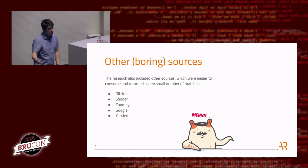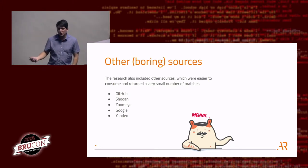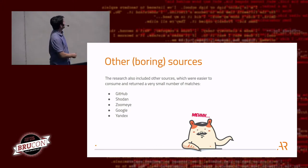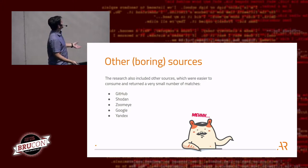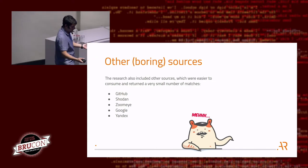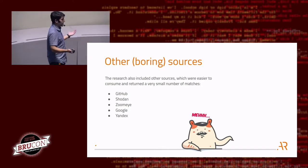I also extracted identity pool IDs from other sources: GitHub — just a search through their API — plus Shodan, Sumai, Google, and Yandex, just calling the APIs and getting results. Nothing special there.